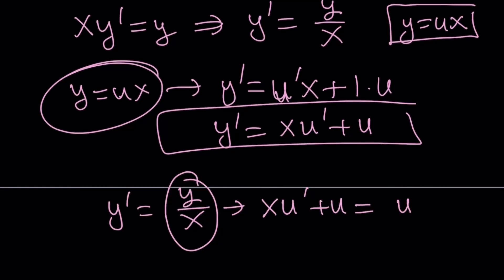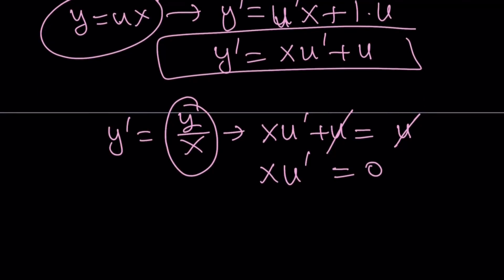Now xu prime plus u. And then I'm going to replace y over x with u. There you go. And then the u is going to cancel out, leaving us with x u prime equals zero. Obviously, x does not equal zero. So then this means that u prime has to be zero, which means u is a constant. And I can go ahead and call this u equals k a constant.